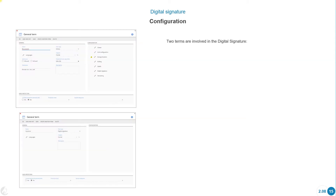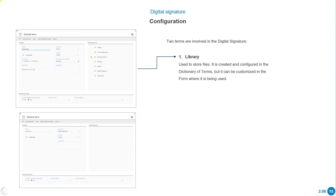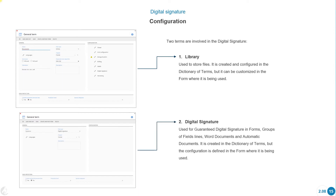Two terms are involved in the digital signature configuration. Library: used to store files, it is created and configured in the Dictionary of Terms but can be customized in the form where it is being used. Digital Signature Term: used to guarantee digital signature in forms, group of field registers, Word documents, and automatic documents — it is created in the Dictionary of Terms, but the configuration is defined in the form where it is being used.